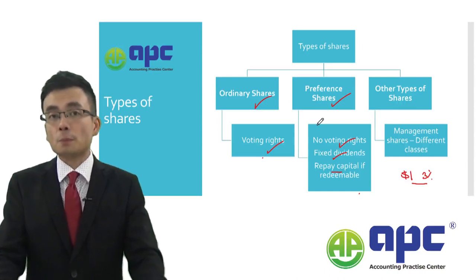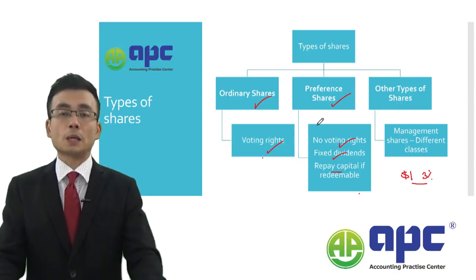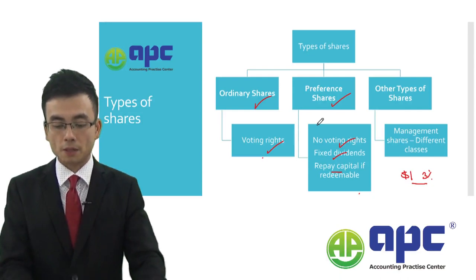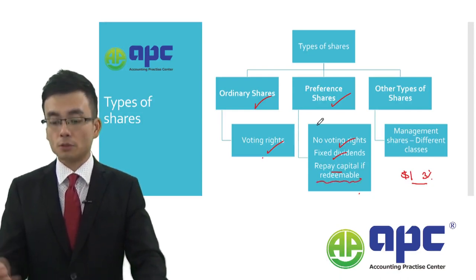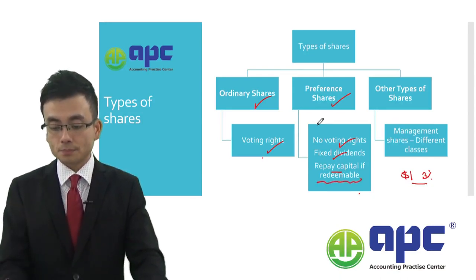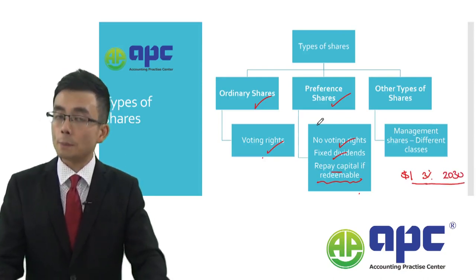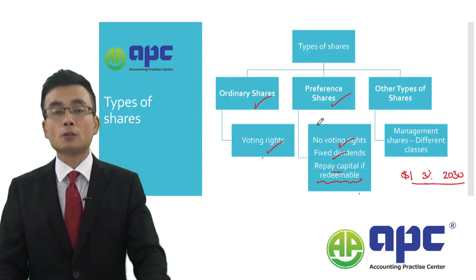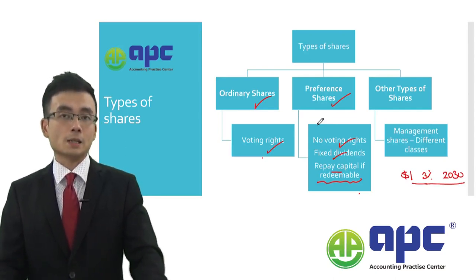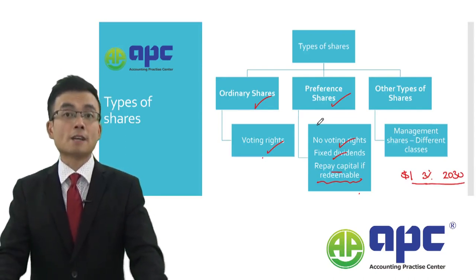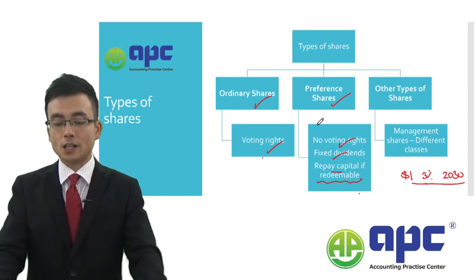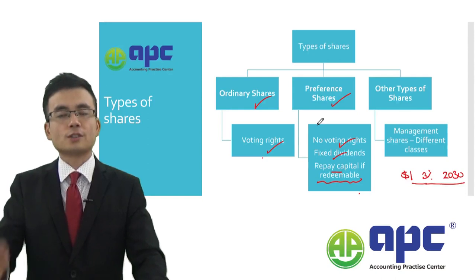If the preference shares issued by the company are called redeemable preference shares, then at some point in the future — for example, in 2030 — the company will repay the amount of capital spent by the investor in the first place. That's called redeemable preference shares.